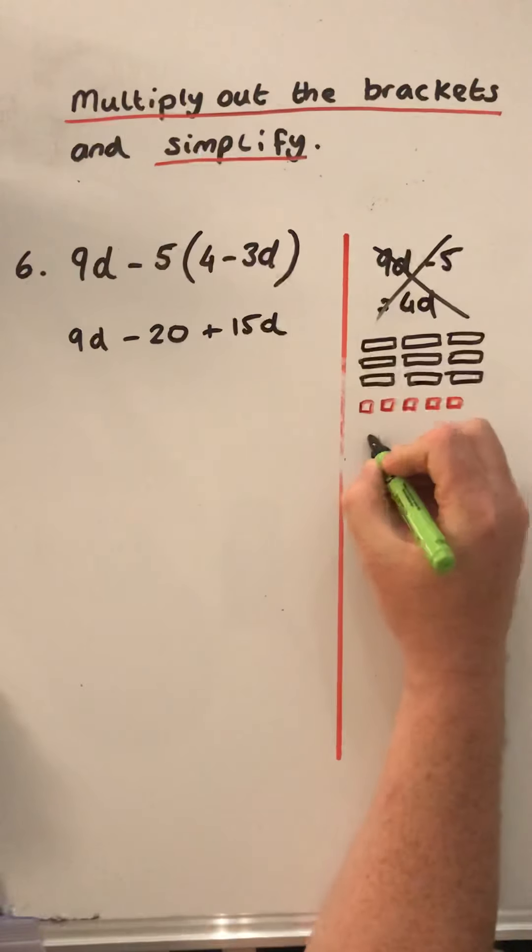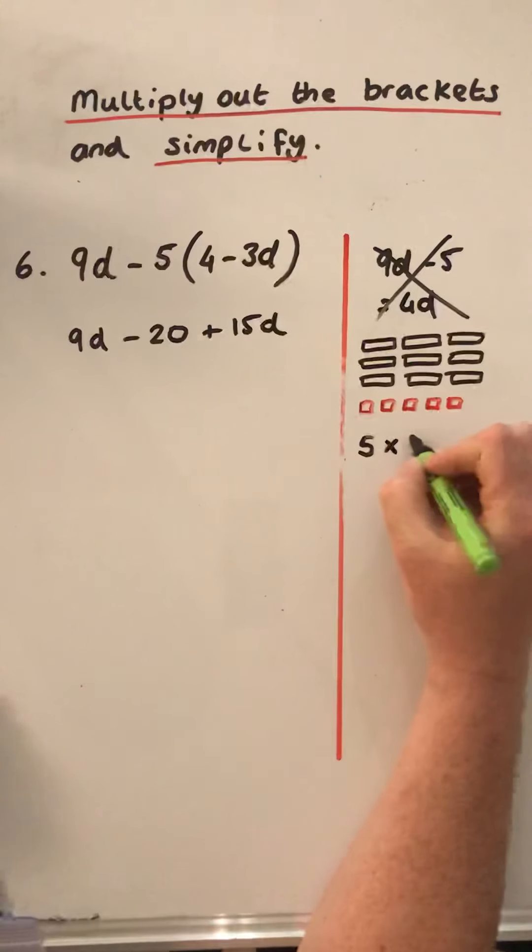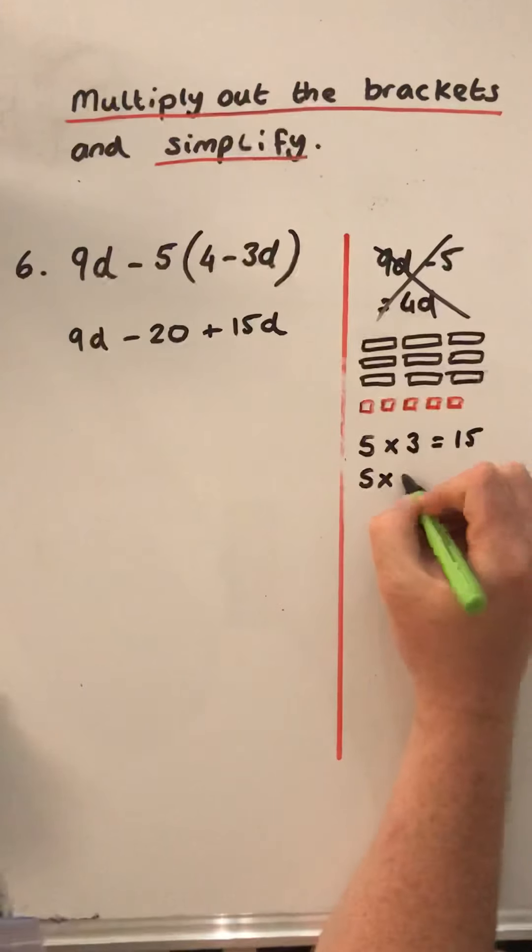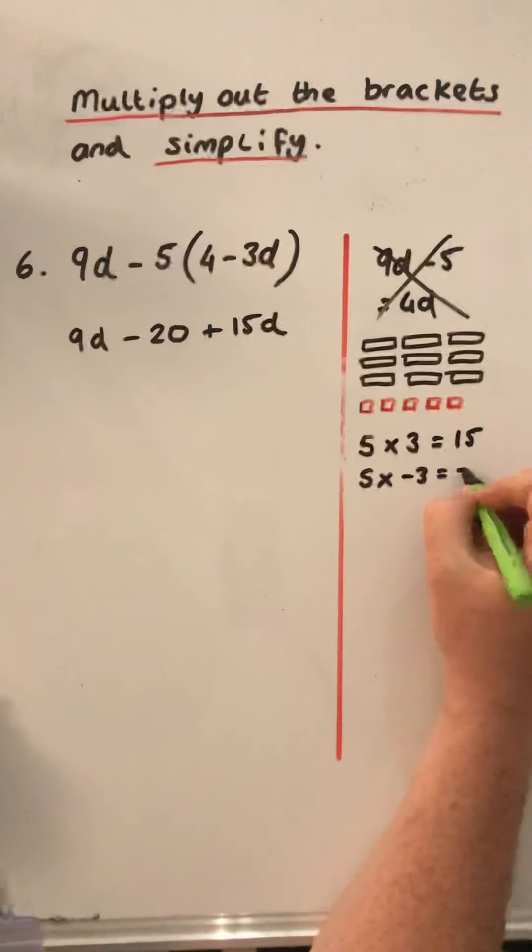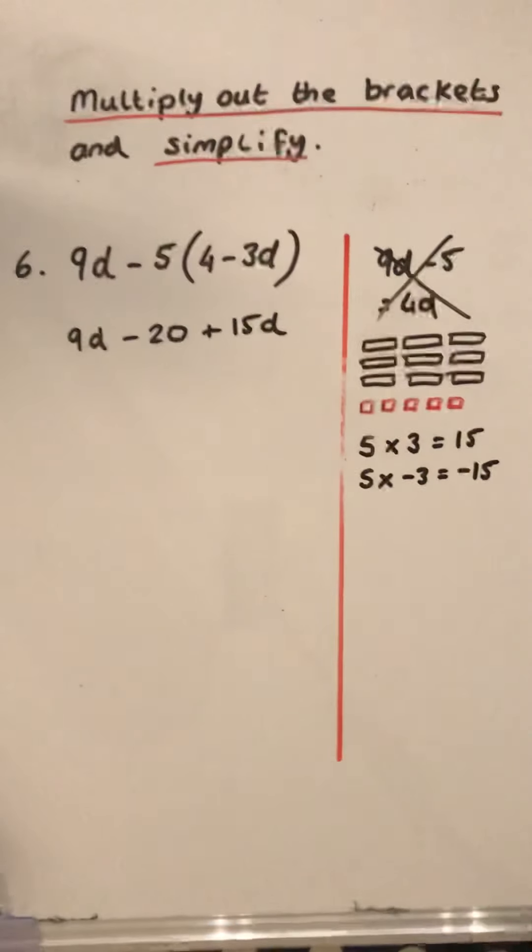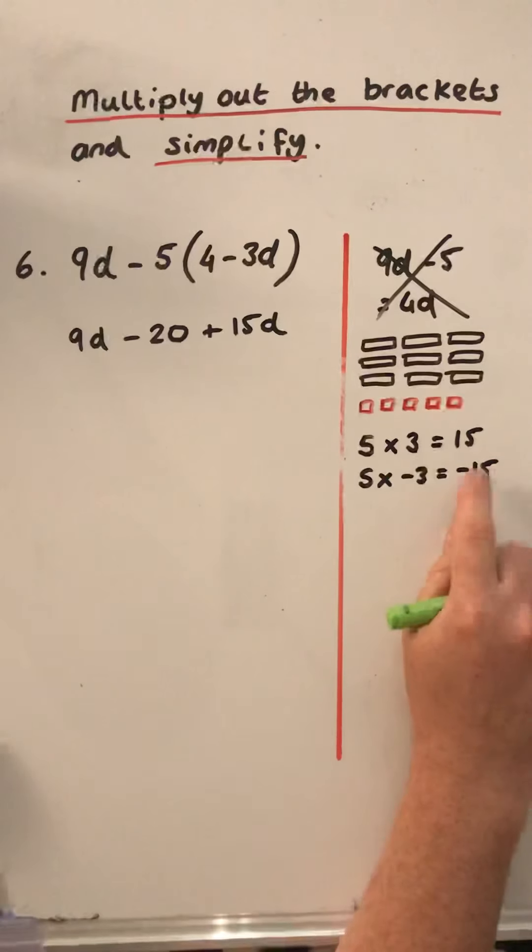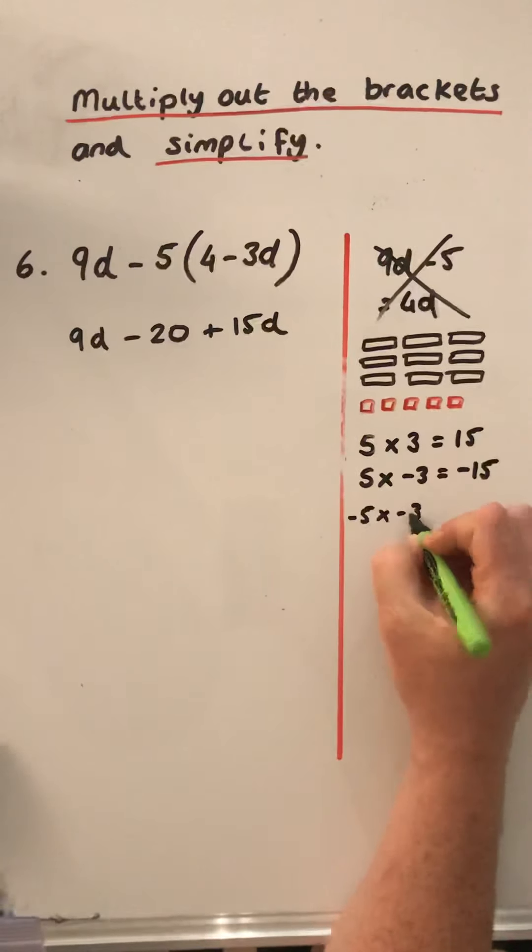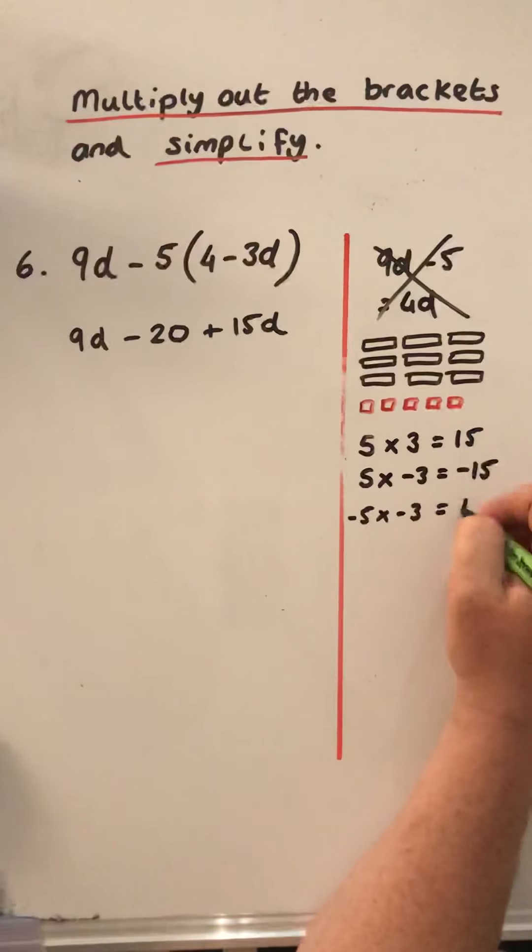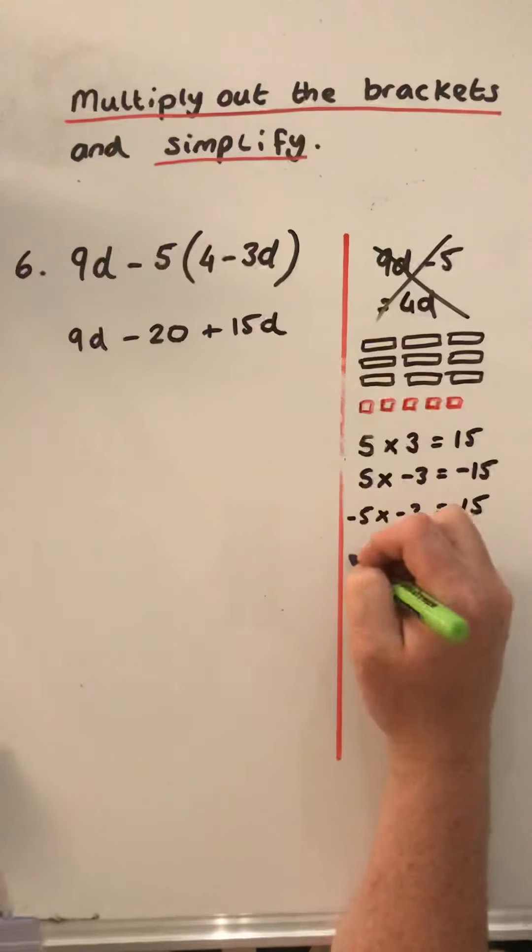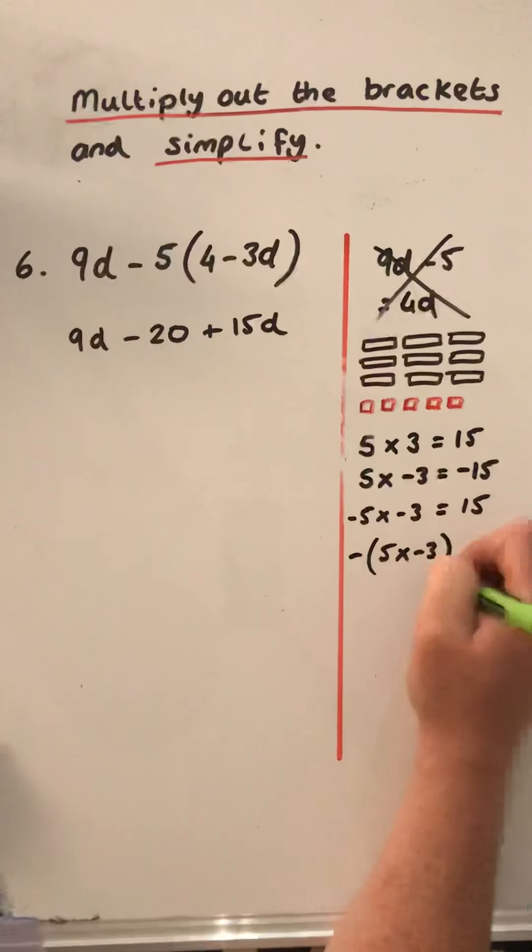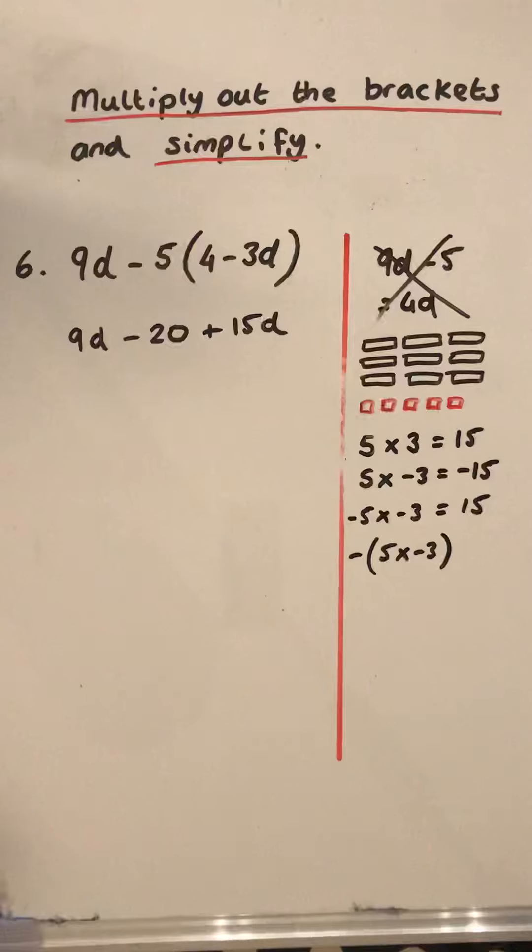Let me share that with you just now here. So 5 groups of negative 3d is negative 15d. So we then have the negative of that. So that is positive 15d. It's the negative of 5 groups of negative 3d.